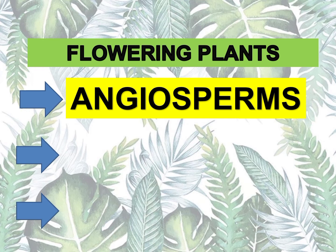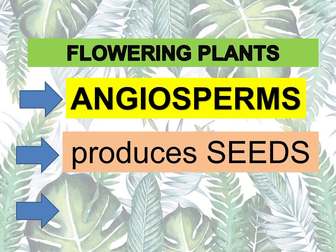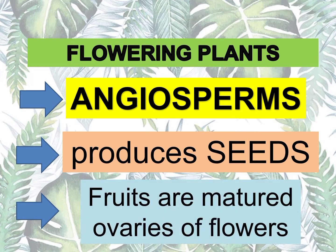Ang pollination ay nagaganap sa flowering plants or angiosperm. Kapag nagkakaroon ng pollination, nagtutuloy siya sa process — naboboo siya, tapos yung pinaka-ovule niya, yun yung pinaka-fruit ng particular plant na yun. At sa loob ng fruits, merong seeds. Ang mga flowering plants, nagproproduce sila ng seeds or buto kasi meron silang fruit. At alam nyo ba na ang fruits ay matured ovaries ng flowers? Yung ovaries ng flower, yun yung fruit na hinaharvest natin. Dati silang ovaries ng flower, dahil nag-undergo ng pollination, nag-change sila ng status nila — from ovaries to fruits.